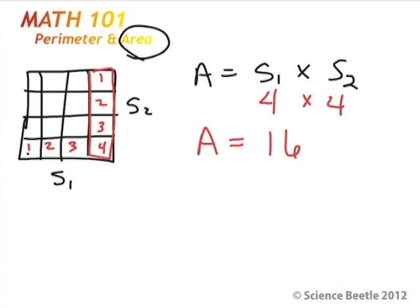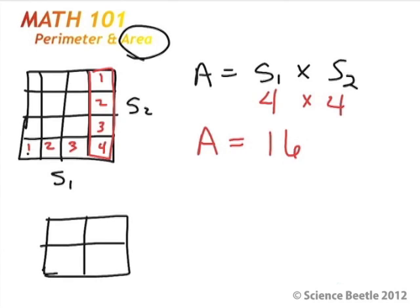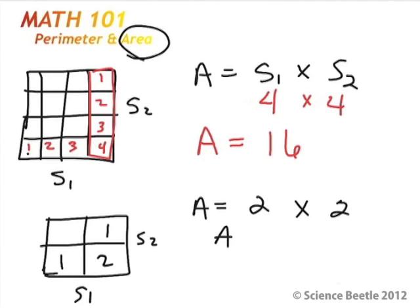This would also be true if we had a smaller box of size two. Here, S1 equals two and S2 equals two, so the area of this particular box would be four.